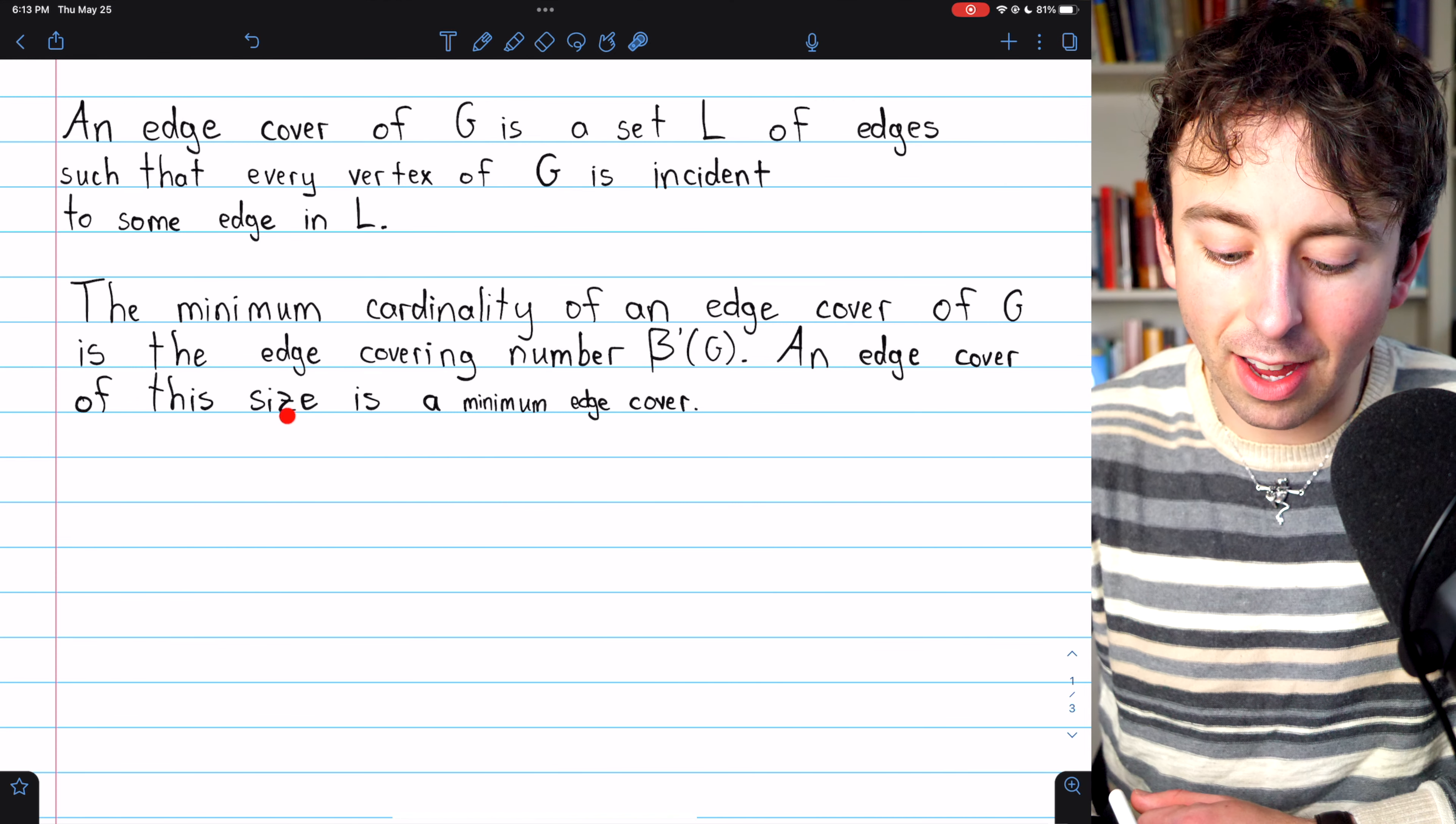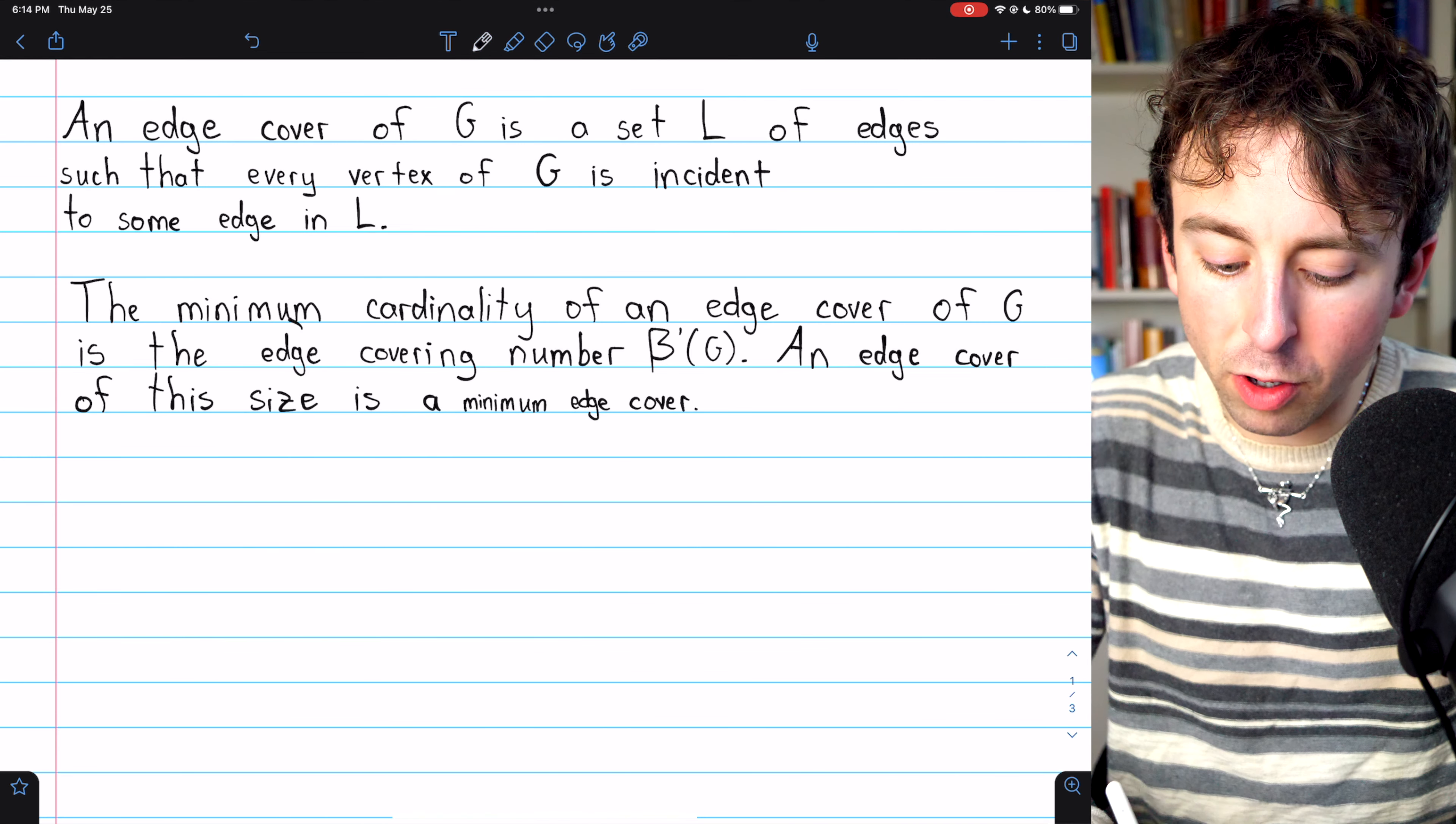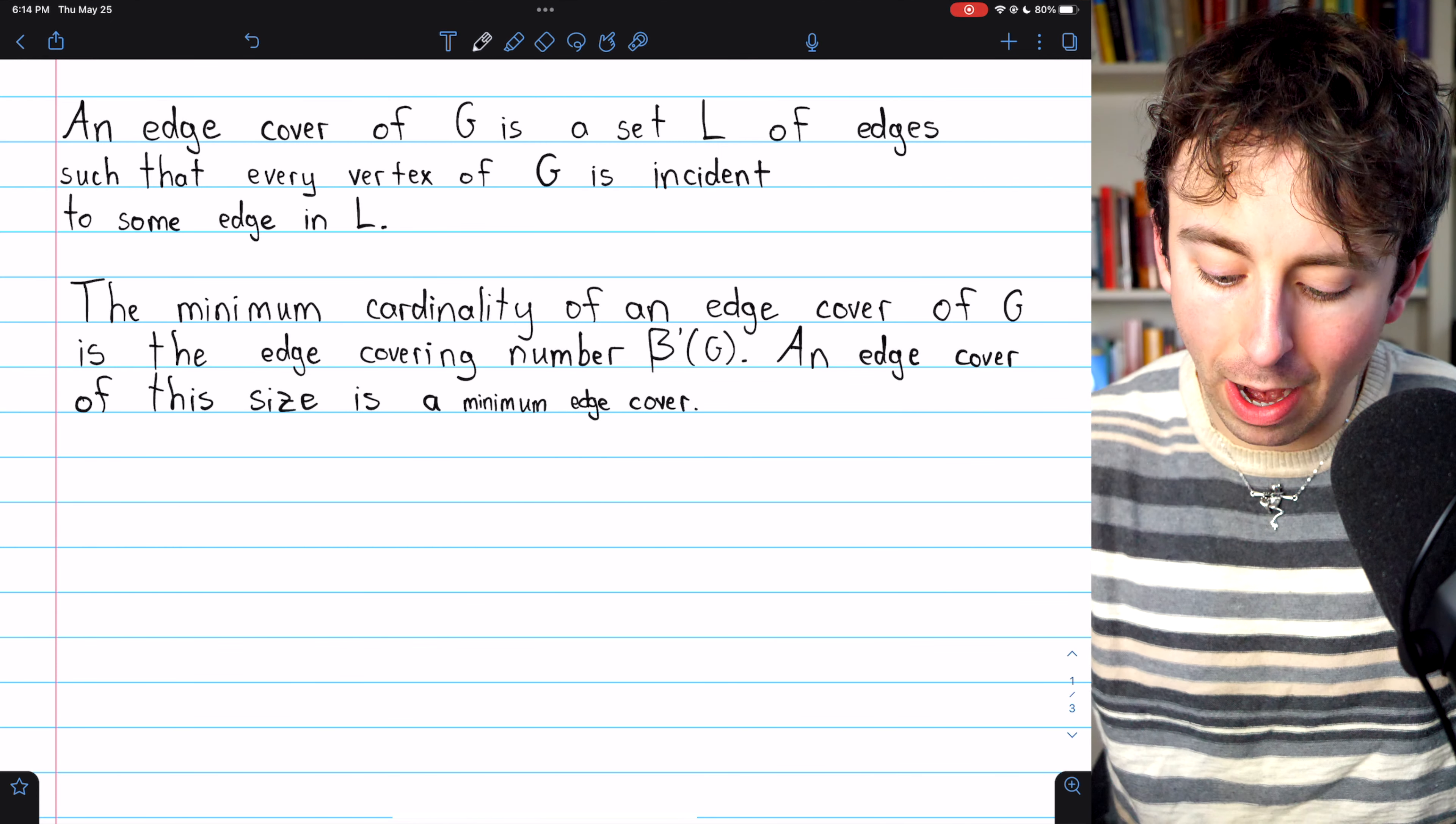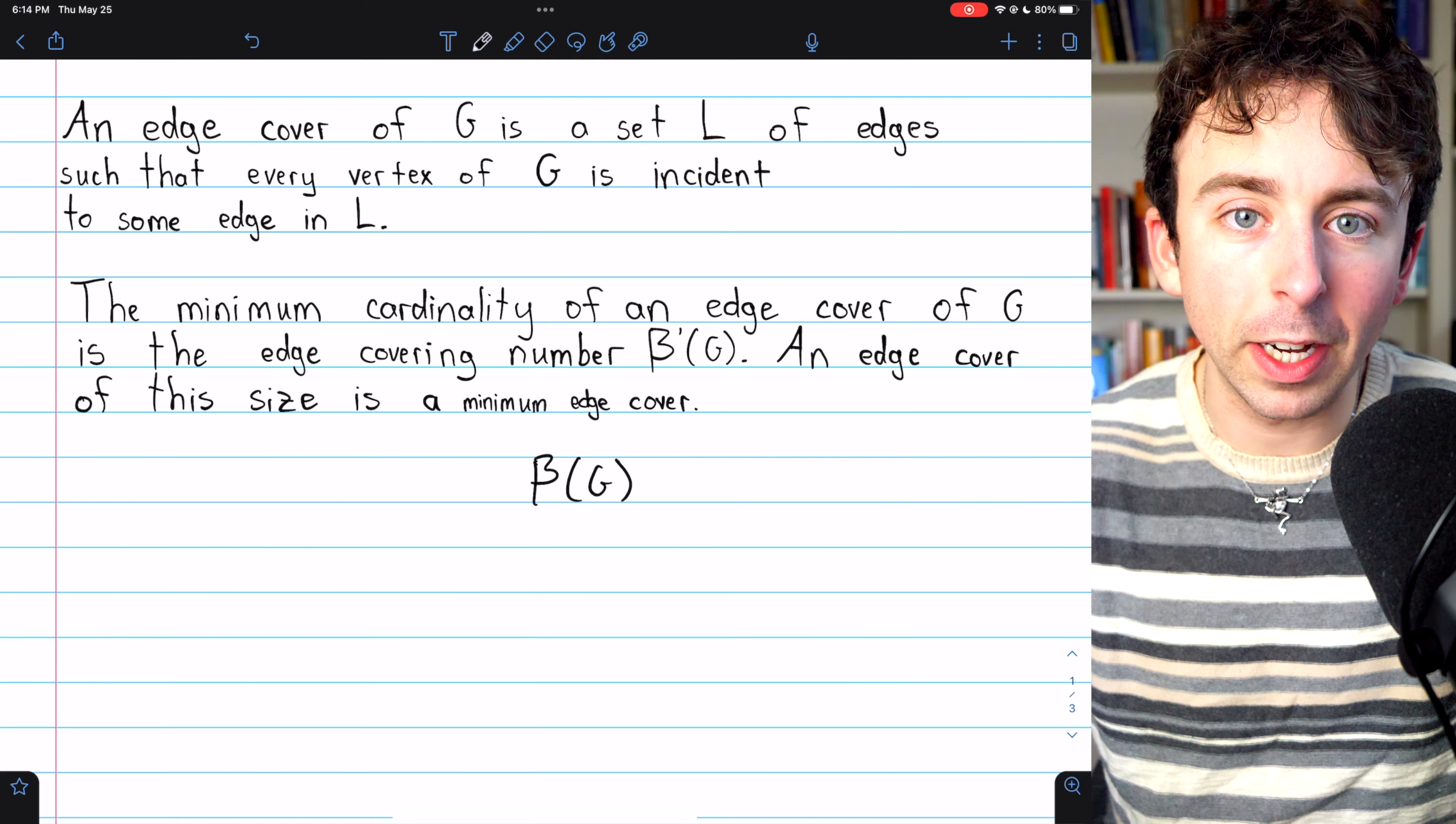An edge cover of this size, this minimum size, is of course called a minimum edge cover. So again, the common notation for the edge covering number of a graph is beta prime of the graph. You may recall that beta of the graph without the prime is common notation for the vertex covering number.